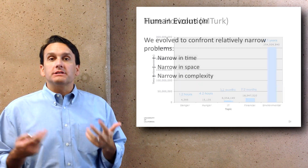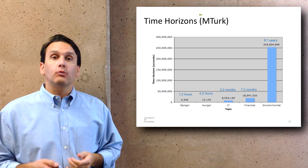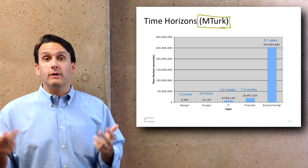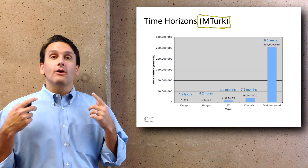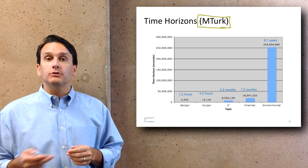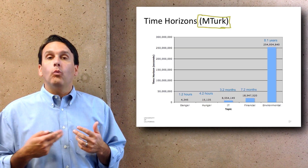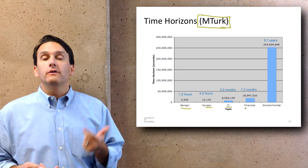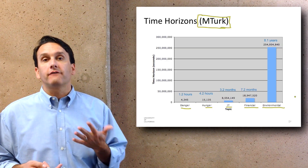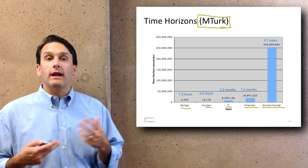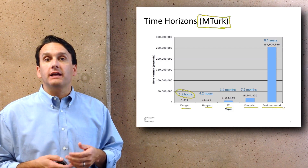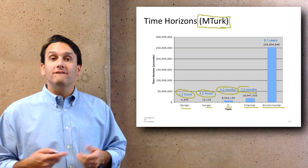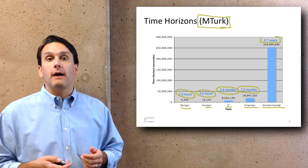One demonstration of this: there exists a system called Mechanical Turk, an Amazon product where you can pose questions to people — there are about 10,000 people willing to answer for a dime or 50 cents. I did a back-of-the-envelope study asking what the relevant time scale was for various topics: danger, hunger, information technology, financial issues, and environmental topics. The results were: danger at about 1.2 hours, hunger at 4.2 hours, information technology at 3.2 months, financial things at 7.2 months, and environmental topics at 8.1 years.